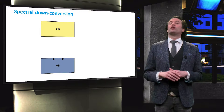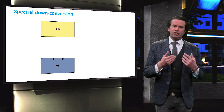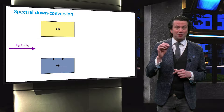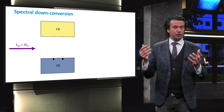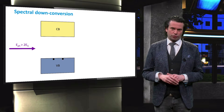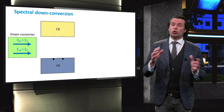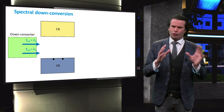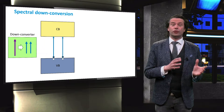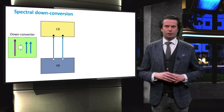The idea of spectral downconversion is to use an additional layer to split one high-energy photon into multiple low-energy photons. A high-energy photon is absorbed at the front of the solar cell and converted into at least two photons with lower energy.